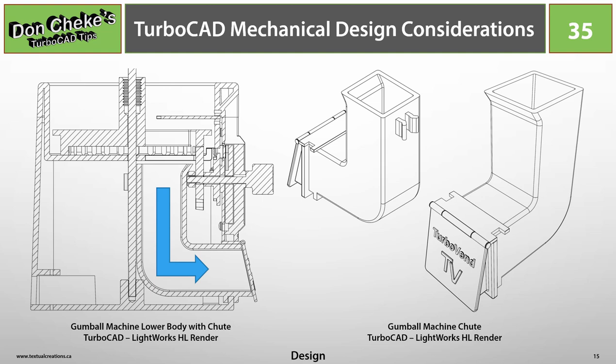Now that most of the challenging parts were designed, it was on to the chute. It was pretty straightforward for the most part now that the available space was determined. I wanted to ensure it would slide into the lower body without any additional fasteners to hold it in place. The overall size of the gumball machine and various placement of parts allowed me to add a post clip as an afterthought. Like the Beaver machine, I added a logo to the door — in this case, a fictitious name: Turbo Vend.